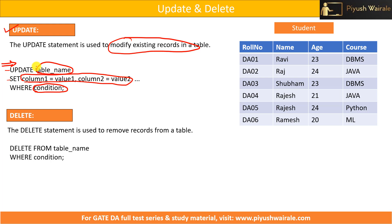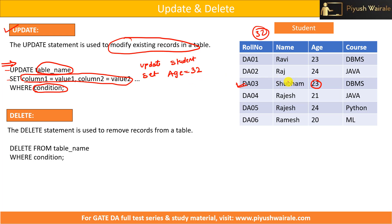For example, I want to update the age of a student whose roll number is DA03 — changing it from 23 to 32. The statement would be: UPDATE student SET age = 32 WHERE roll_number = 'DA03'. If I execute this command, the value of age will be 32 after execution.